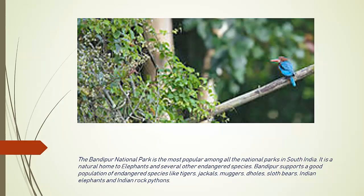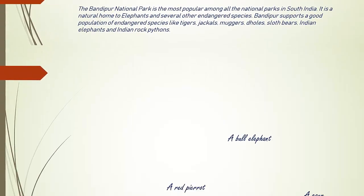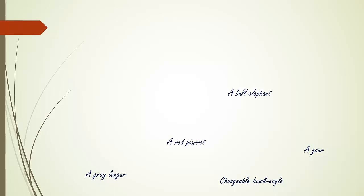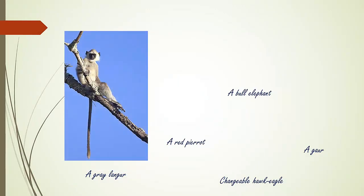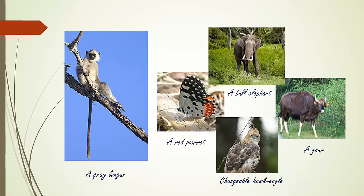Bandipur National Park from Karnataka. Bandipur National Park is the most popular among all the national parks in South India. It is a natural home to elephants and also has populations of endangered species like tigers, jackals, muggers, dholes, sloth bears, Indian elephants, and Indian rock pythons. Examples of animals at Bandipur include Grey Langur, Red-legged Partridge, Bull Elephant, Changeable Hawk Eagle, and Gaur. Gaur is nothing but the Indian Bison.